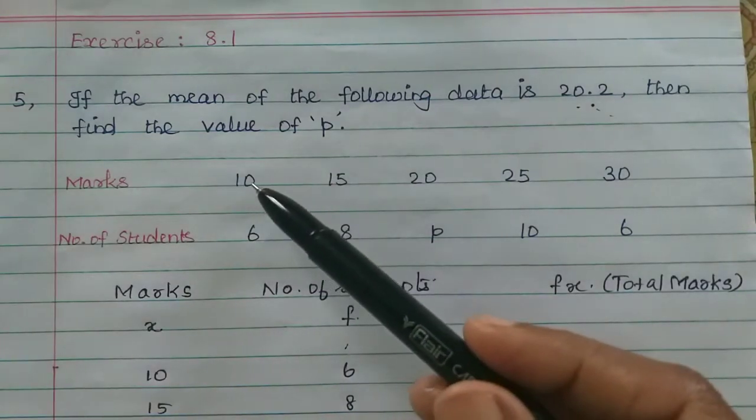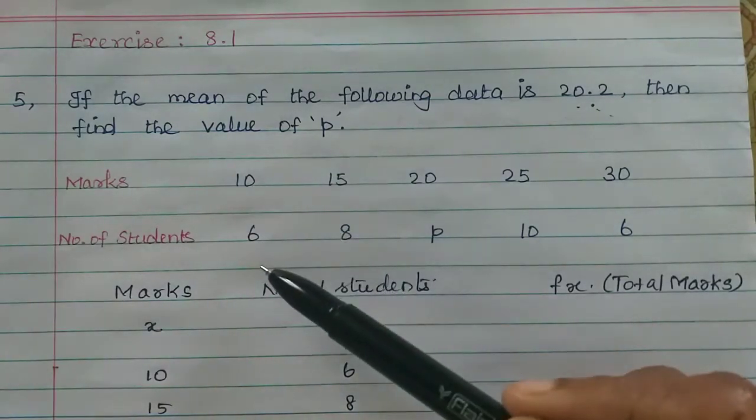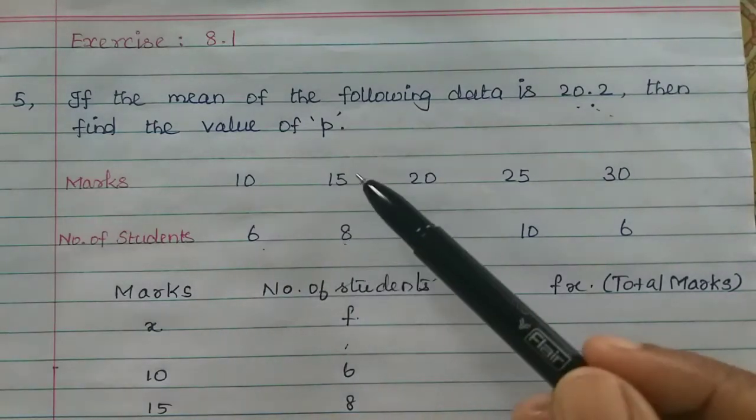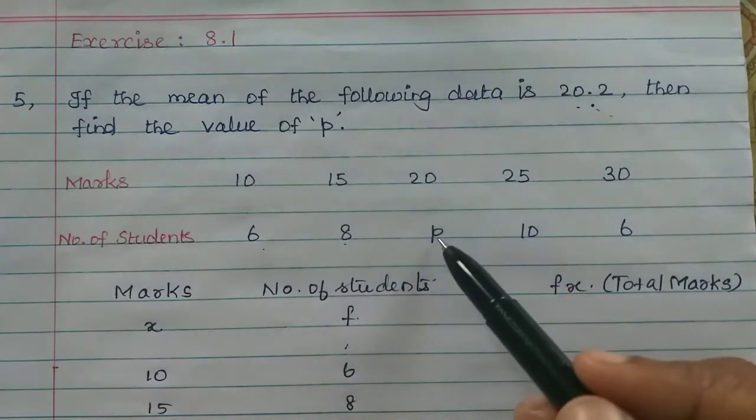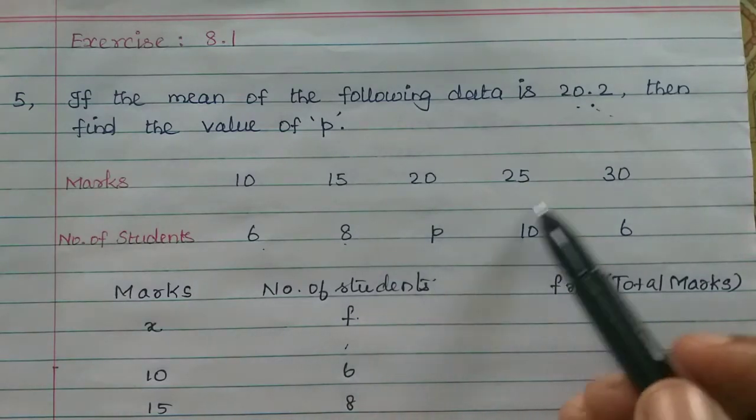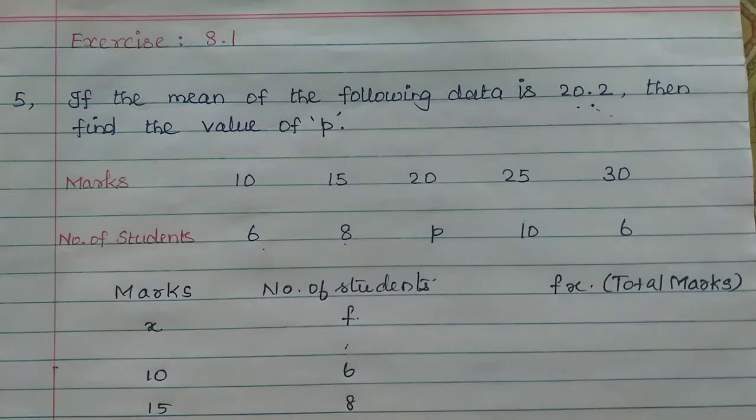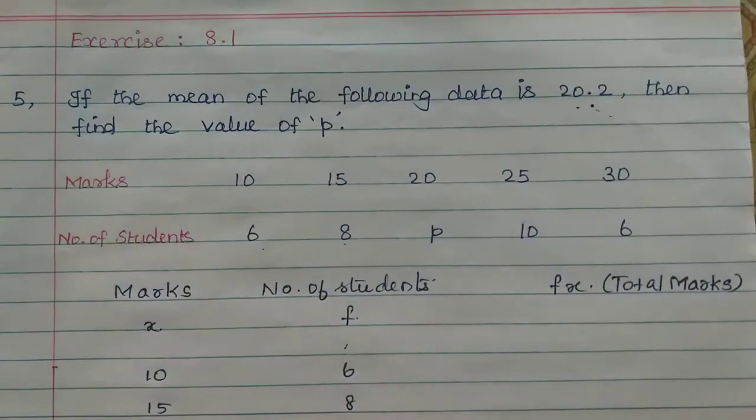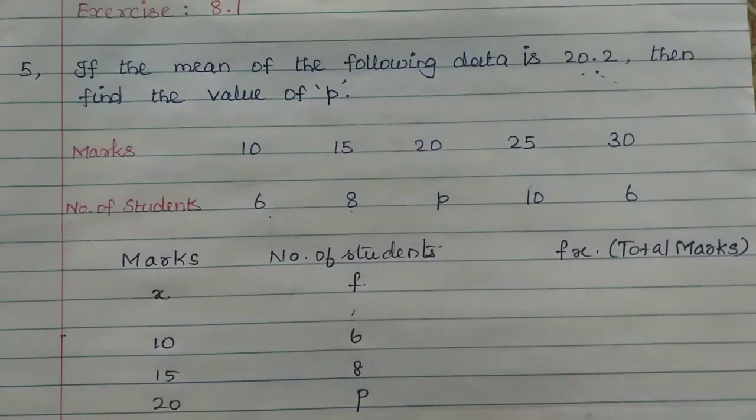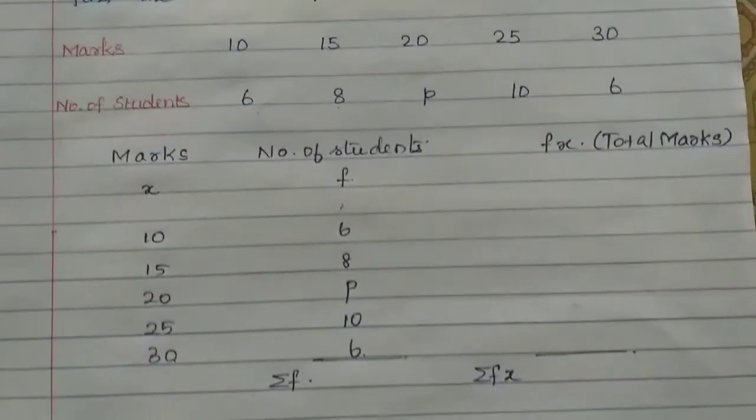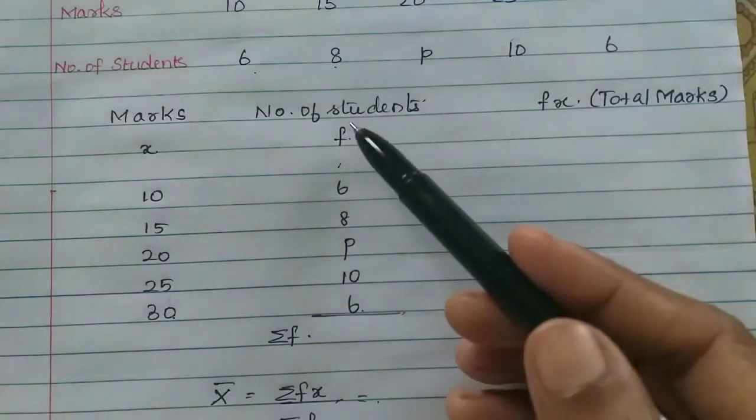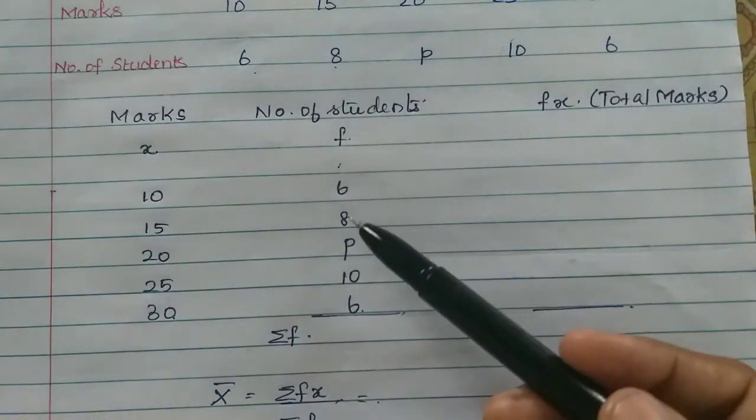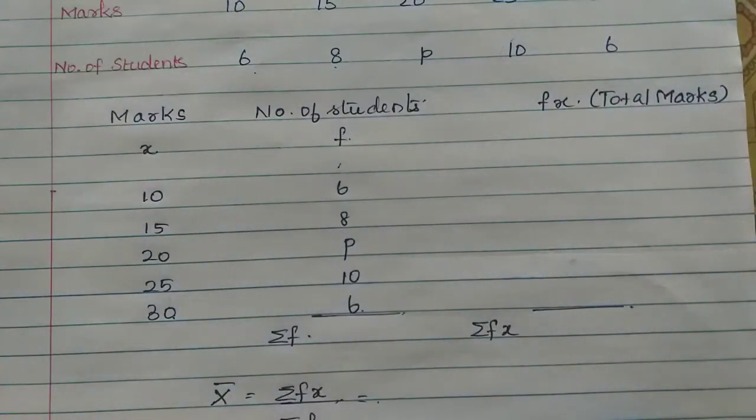The data shows: 6 students score 10 marks, 8 students score 15 marks, P students score 20 marks, 10 students score 25 marks, and 6 students score 30 marks. Marks are x and number of students is the frequency.